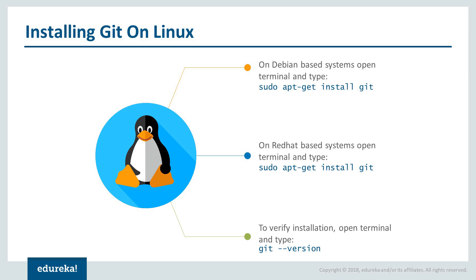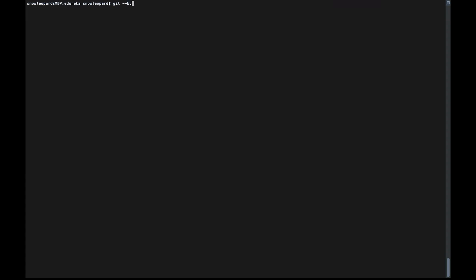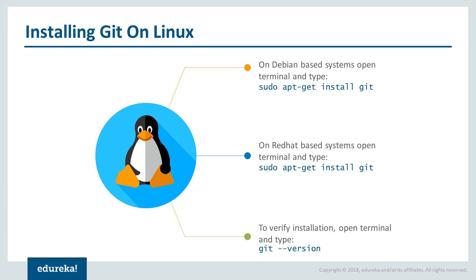Once Git is installed, you can verify the installation by checking the version. To check the version, execute the git version command. For example, right now I'm using version 2.19 of Git, which can be a little bit old since I have already installed it on my system.